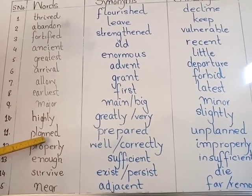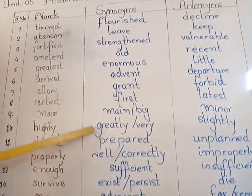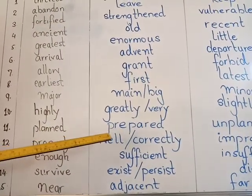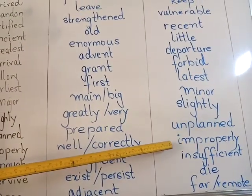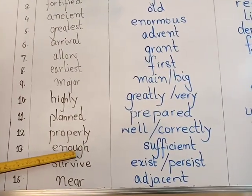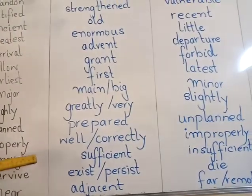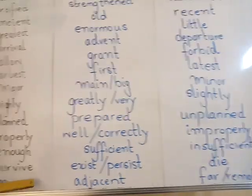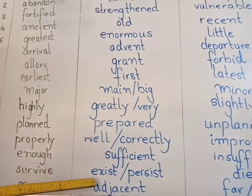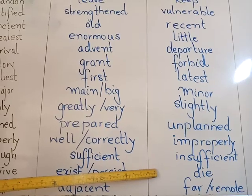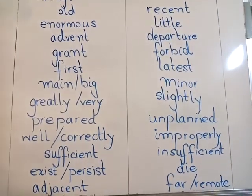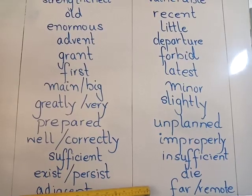Planned: synonym is 'organized' or 'prepared', antonym is 'unplanned'. Properly: synonym is 'correctly' or 'well', antonym is 'improperly'. Enough: synonym is 'sufficient', antonym is 'insufficient'. Survive: synonym is 'exist' or 'persist', antonym is 'die'. Near: synonym is 'adjacent' — meaning barabar, paas — and antonym is 'far' or 'remote'.